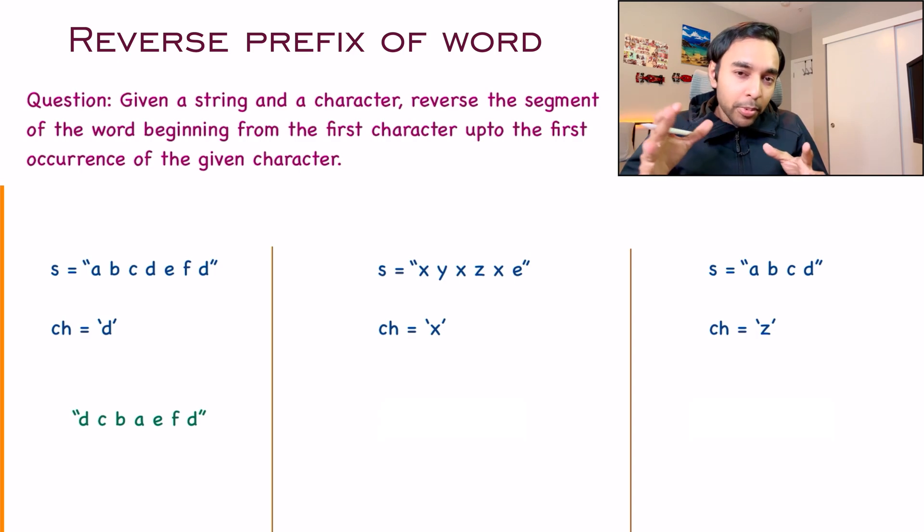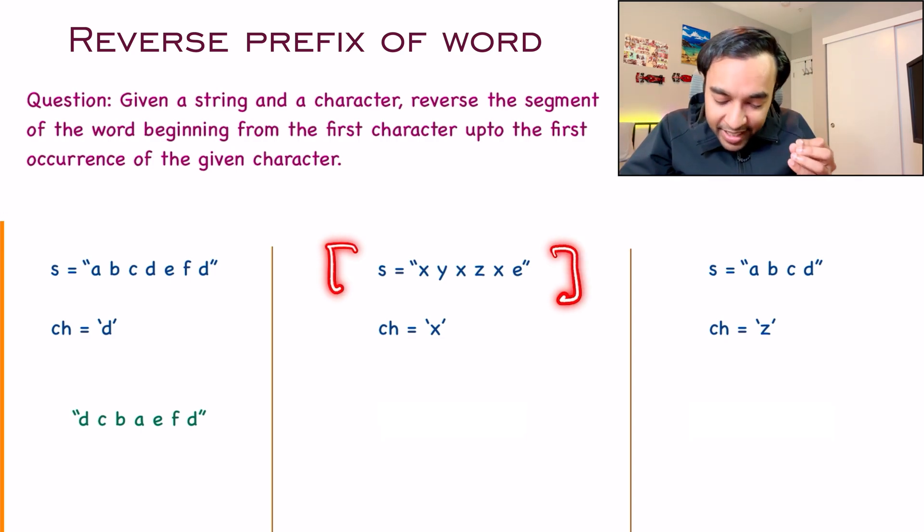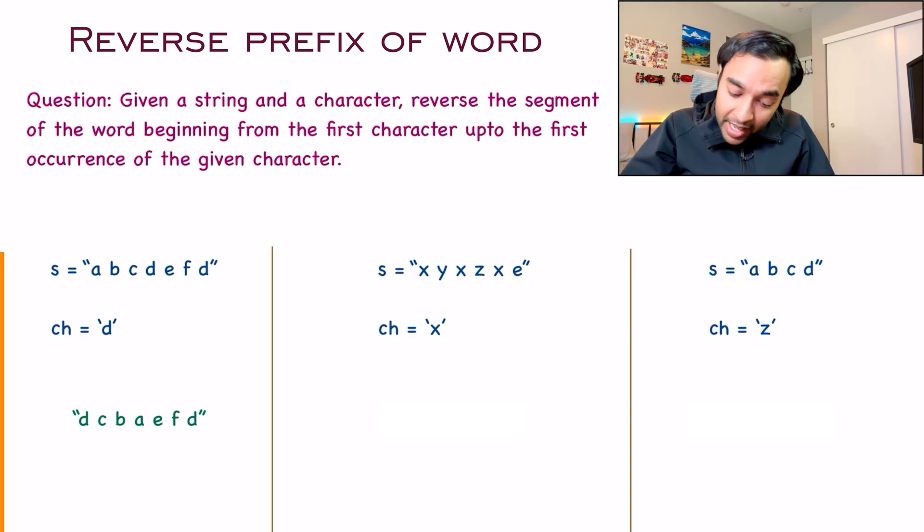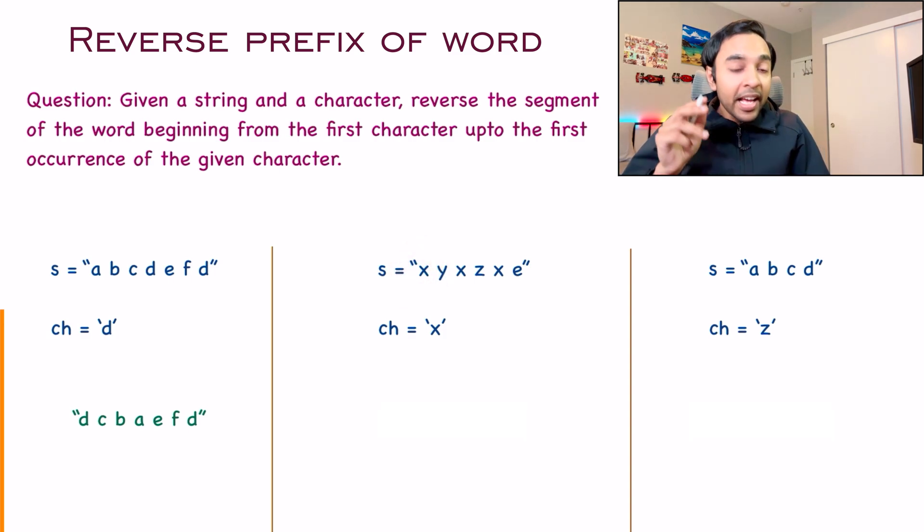In this problem you might have some edge cases as well. For example, look at the second test case. My string is x, y, x, z, x, e. You can see that there are a lot of x's and the character itself is x. But don't worry, you have to follow what the problem says. You have to find the first occurrence of x and then starting from the beginning you just have to reverse the segment.